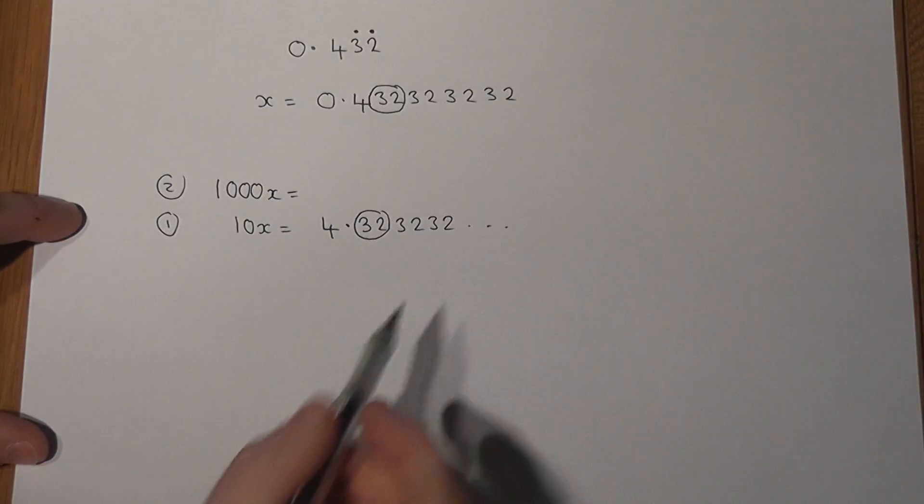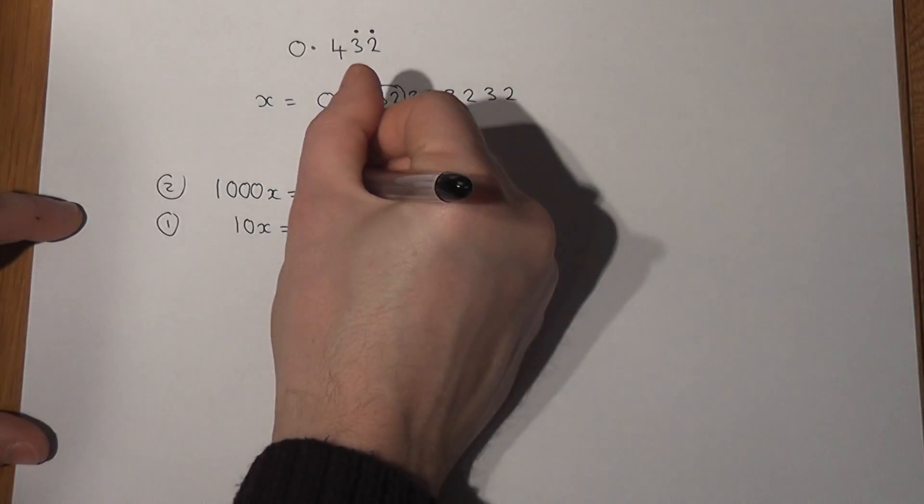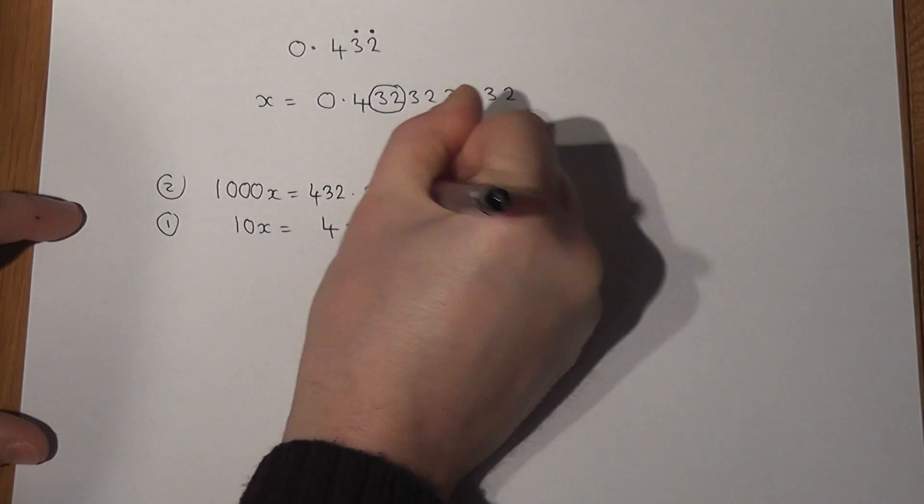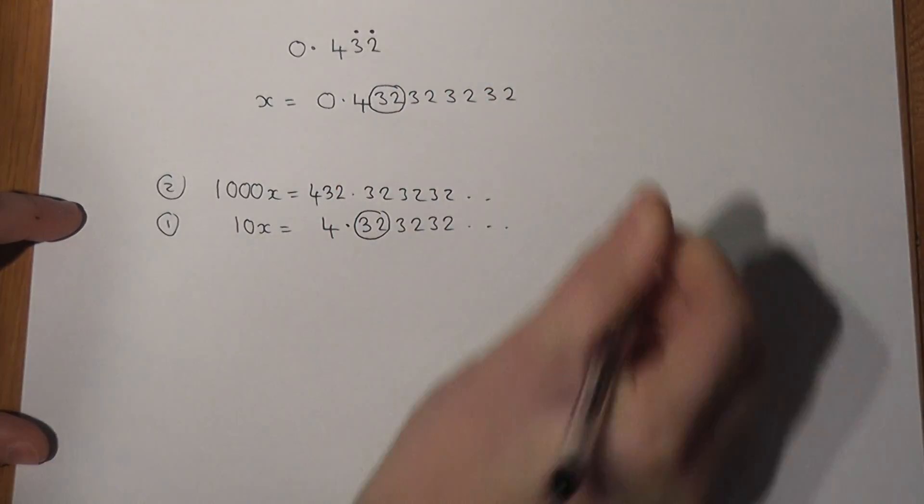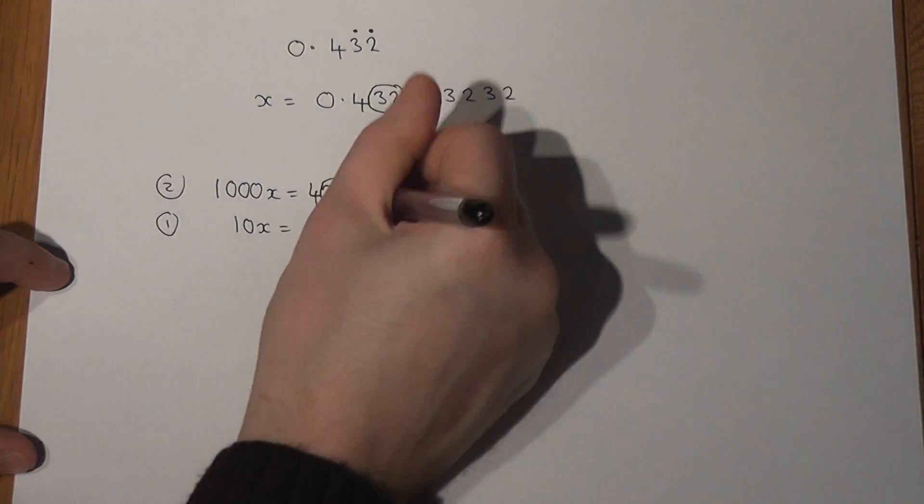And if I times by 1000, 1, 2, 3 numbers will shift to the left of the point. So I get 432.3232. And there is my circled recurring bit to the left of the point.